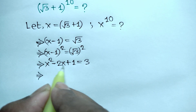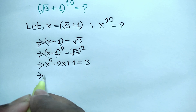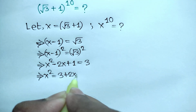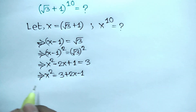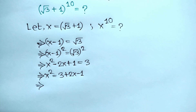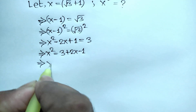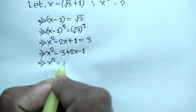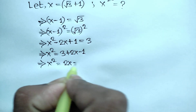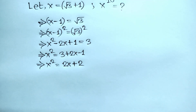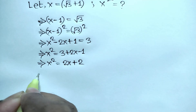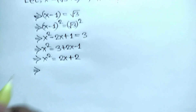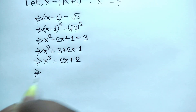Taking negative 2x and positive 1 to the right side, we get x squared is equal to 3 plus 2x minus 1, which simplifies to x squared is equal to 2x plus 2. Now we need to find x to the power 10, so we will square both sides again.